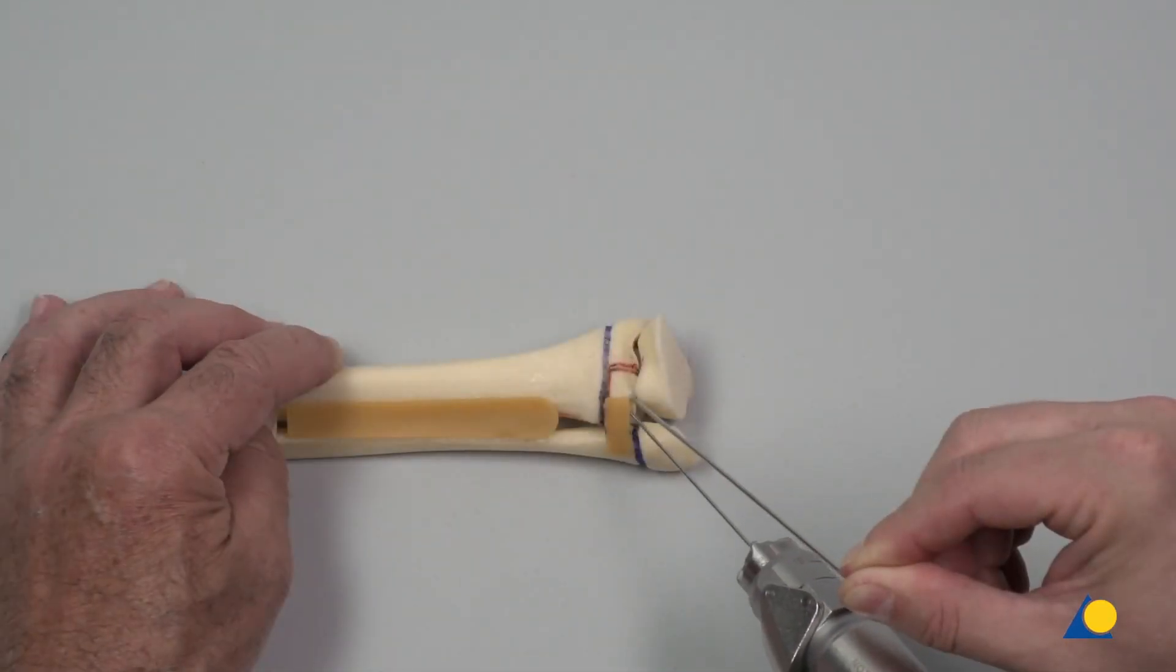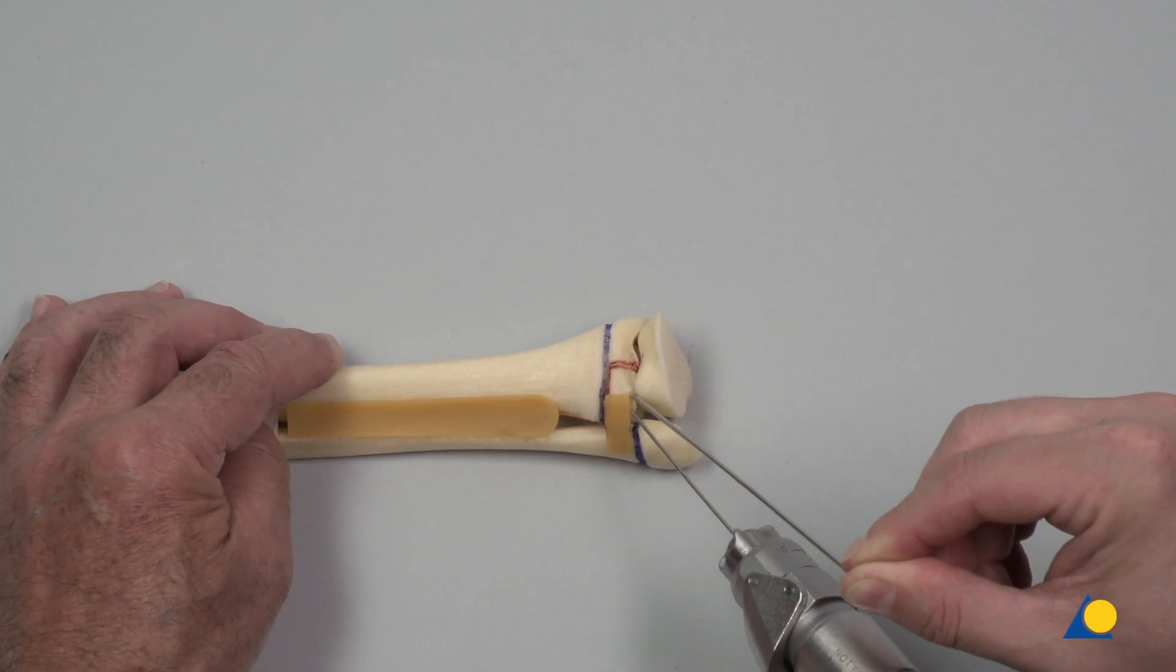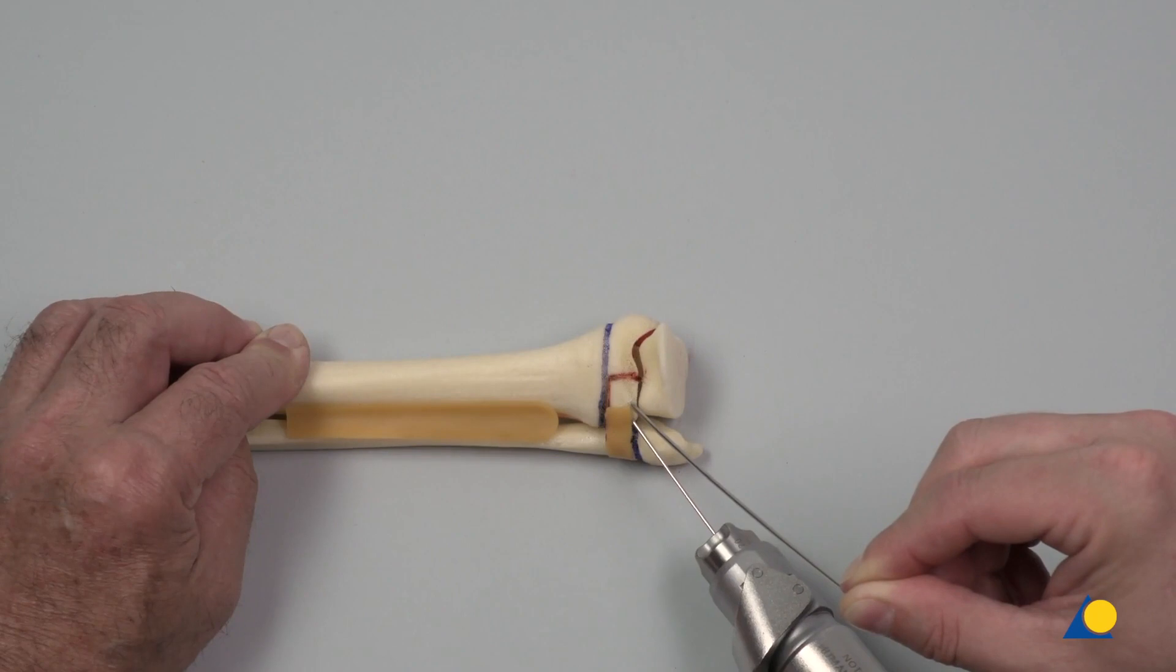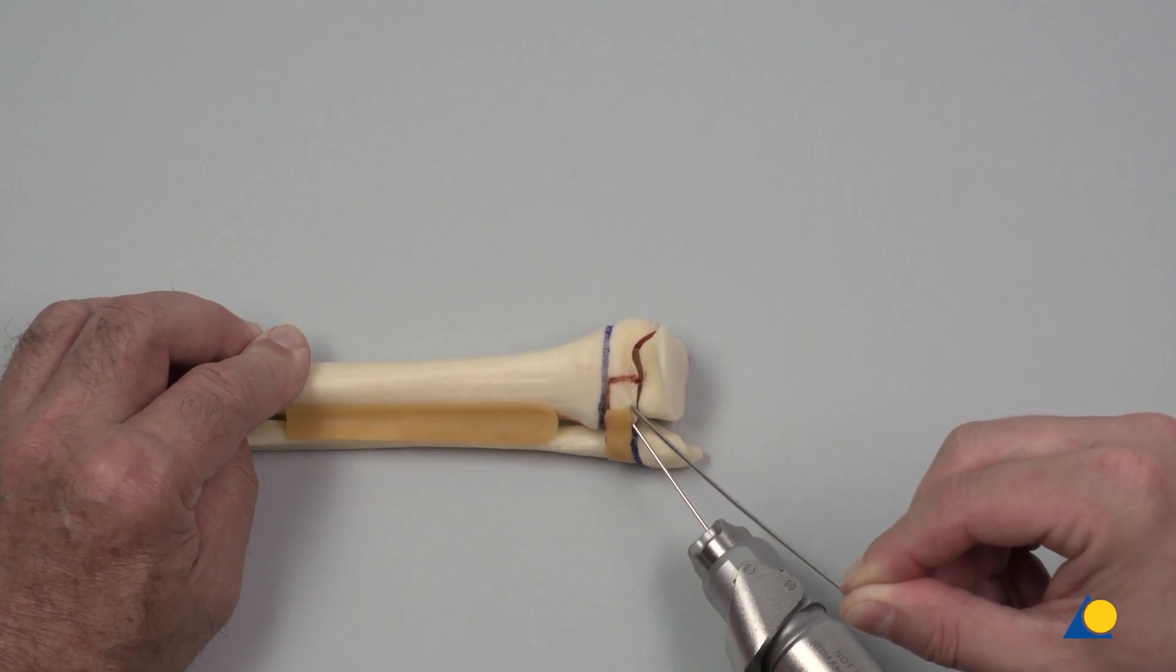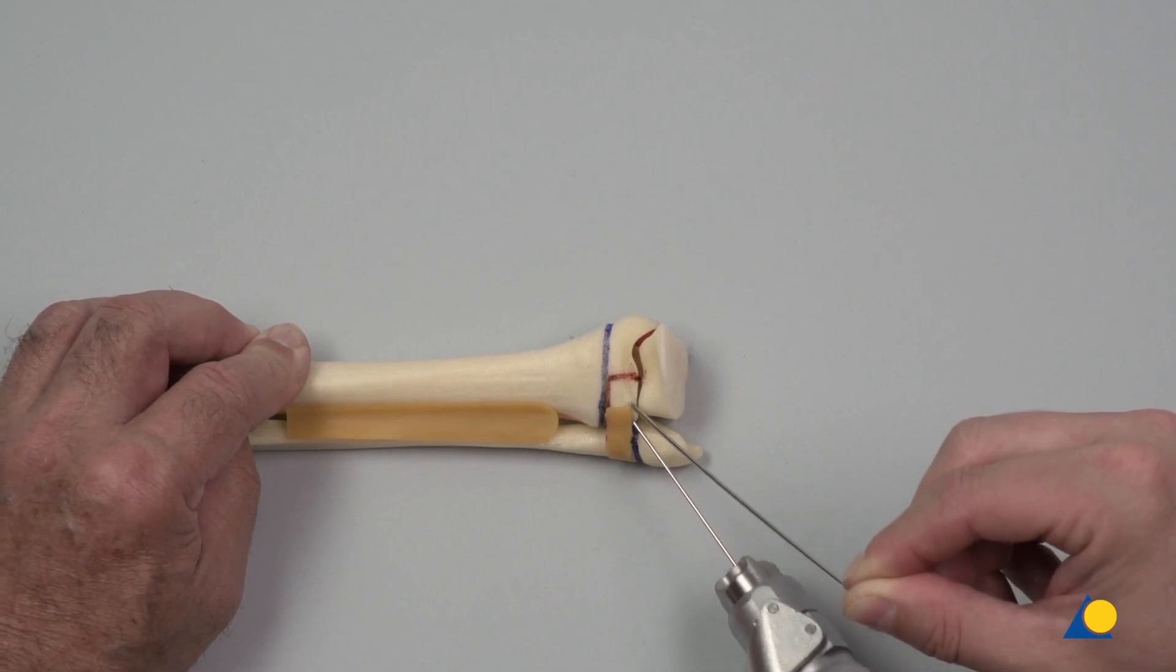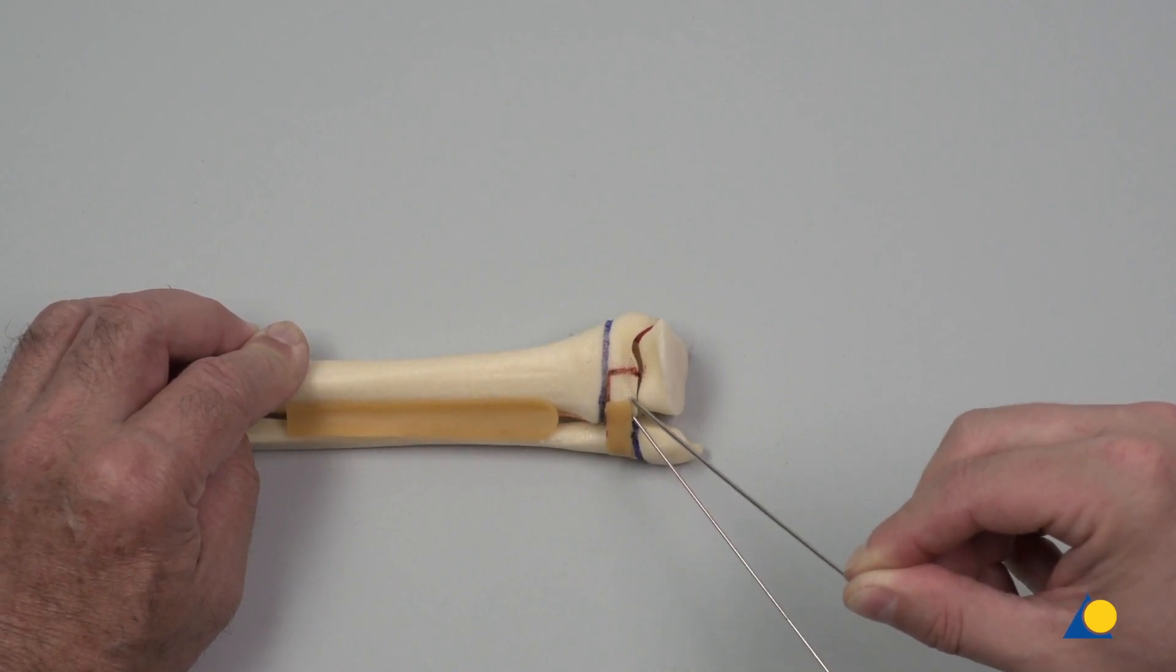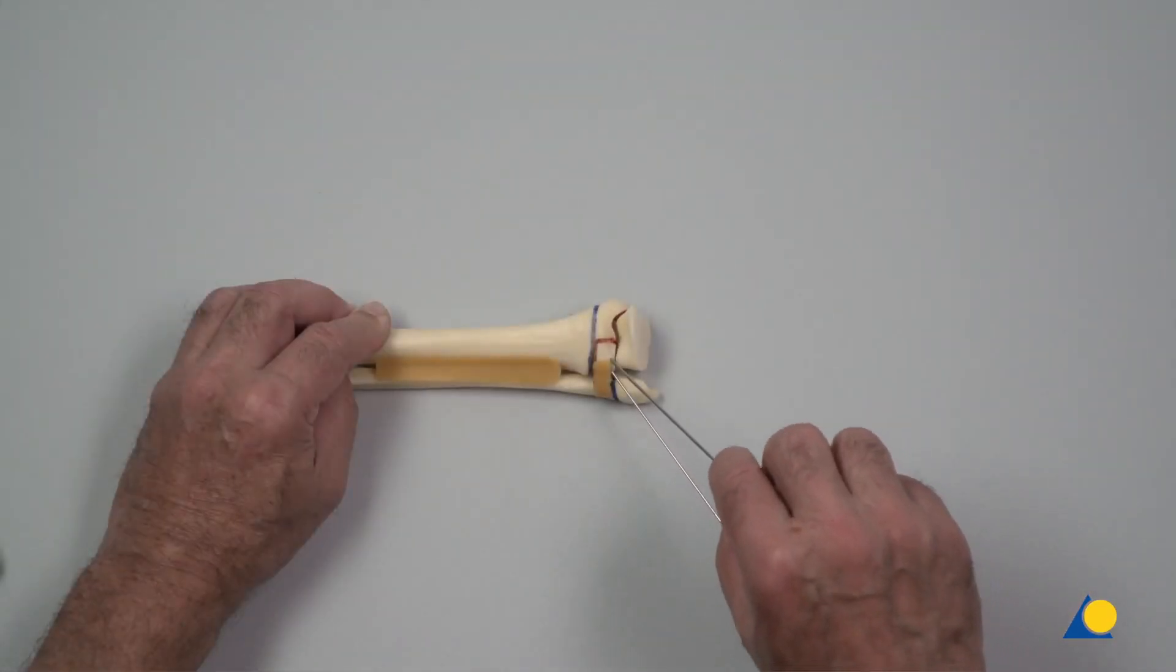After anatomically correct reduction has been achieved, the 1.25 mm guide wire with threaded tip is advanced to the contralateral cortex. Note the oblique direction of the wire passing the medial side of the almost closed growth plate. The K wire is removed.